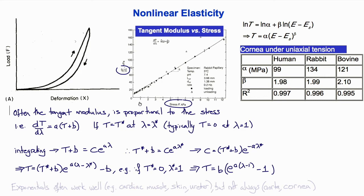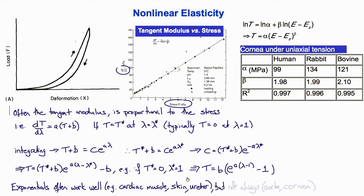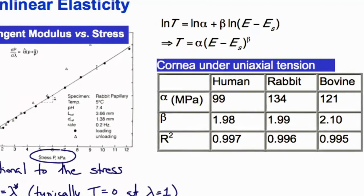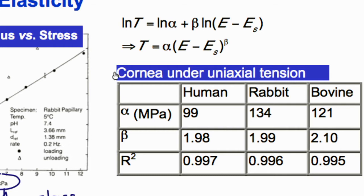This approximation of an exponential stress-strain relation — deriving from the observation that the slope of the stress-strain relationship is proportional to the stress — works very well for cardiac muscle, skin, and ureter. But not for all tissues, such as the aorta, which has a lot of elastin and tends to be more linear, and the cornea, which has a very specialized structure. For the cornea, a power-type law where T is proportional to strain raised to a power, with three coefficients α, β, and ε_s, works quite well.